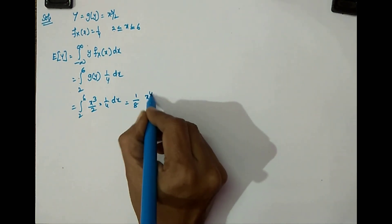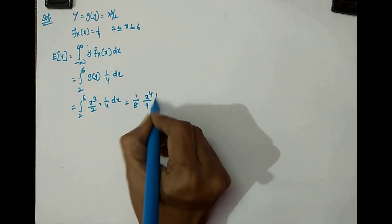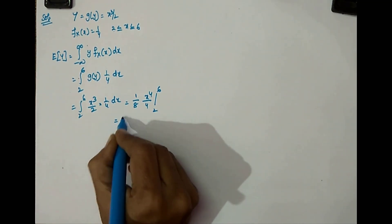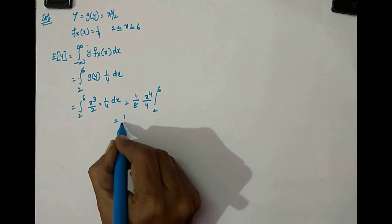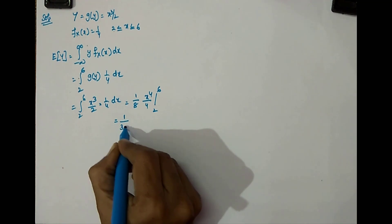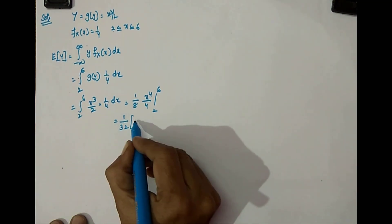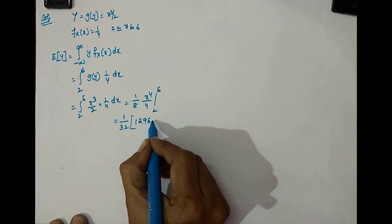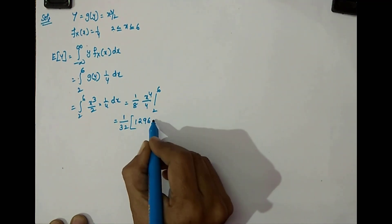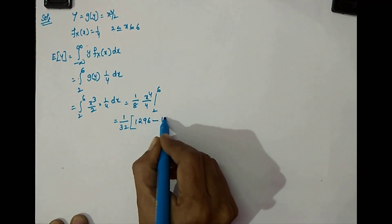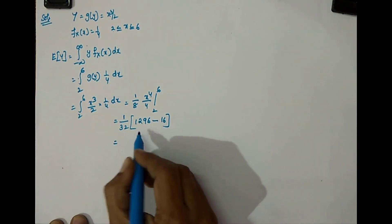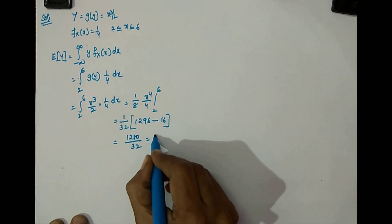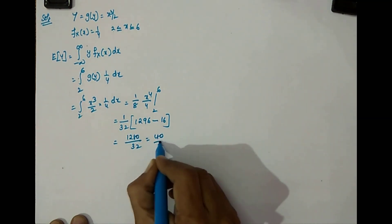Continuing the calculation: (1/8) times x⁴/4, evaluated between the limits 2 to 6. Substituting the limits gives (1/32) times (6⁴ minus 2⁴), which equals (1/32) times (1296 minus 16) equals 1280/32, and the answer is 40.